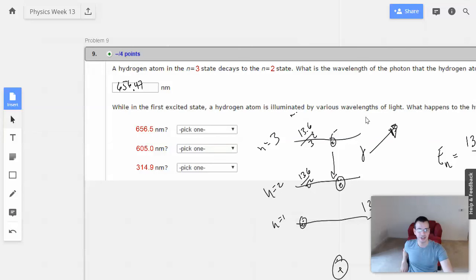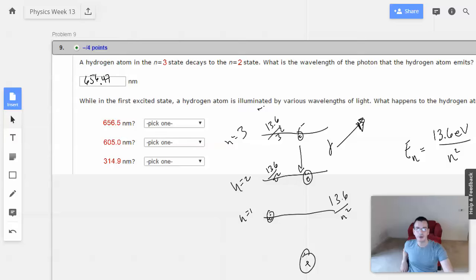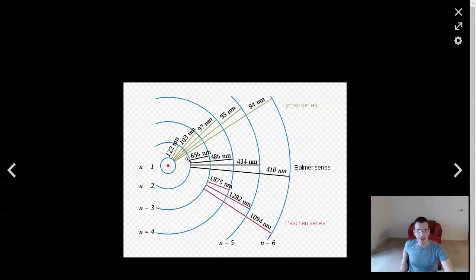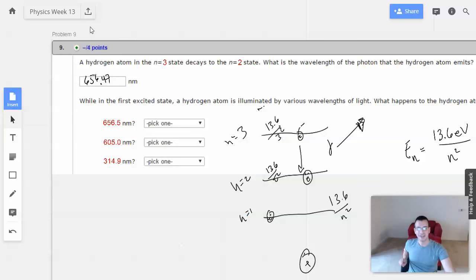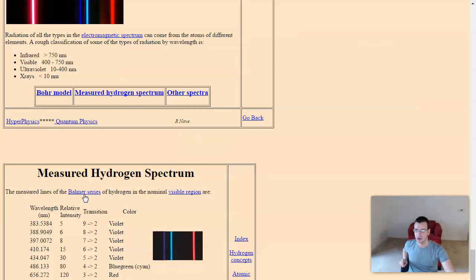So, the first excited state is illuminated by the various wavelengths. So, looking at this guy. That's what I was thinking wrong. So, it's in the first excited state. Excited, i.e. not ground state. So, it's in the second. So, it's actually going to be in the Balmer series.